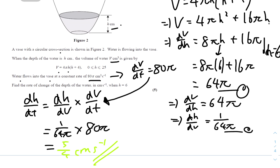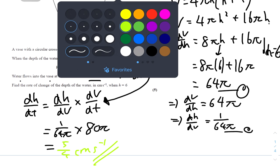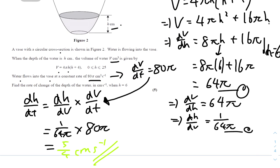The reason we use cm and not cm cubed or cm squared is because we're finding the depth of the water, which is measured in cm.